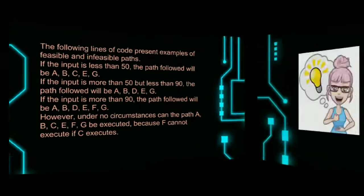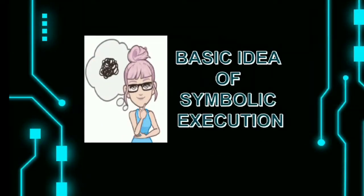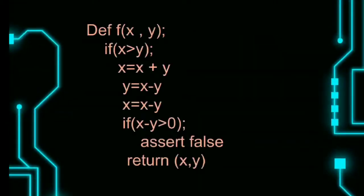Basic idea of symbolic execution. Let's see an expression. First, we have to take x and y as input. The first condition is: if x is greater than y, x equals x plus y, y equals x minus y, x equals x minus y. The second condition is: if x minus y is greater than 0, assert false. Return x, y.